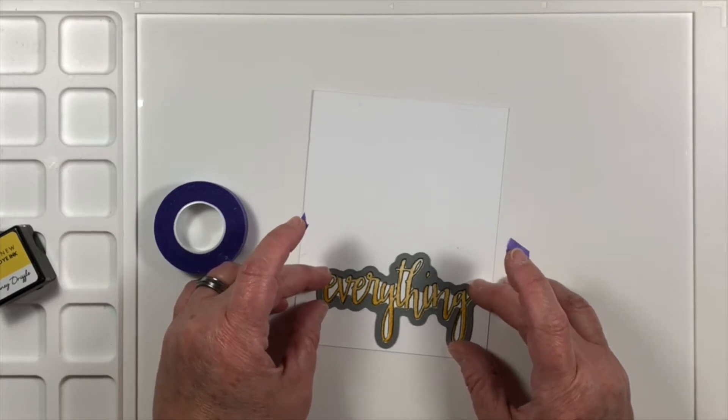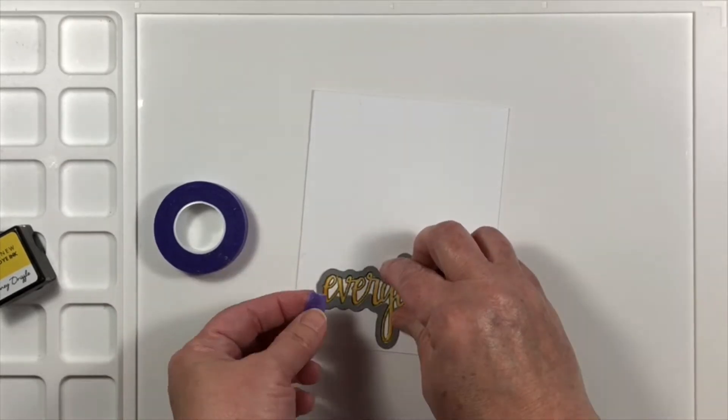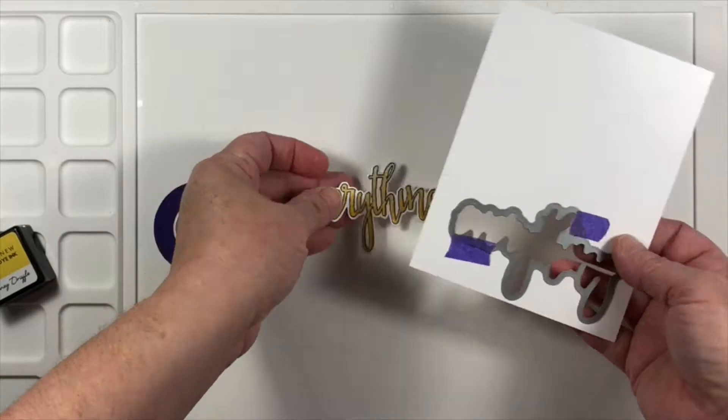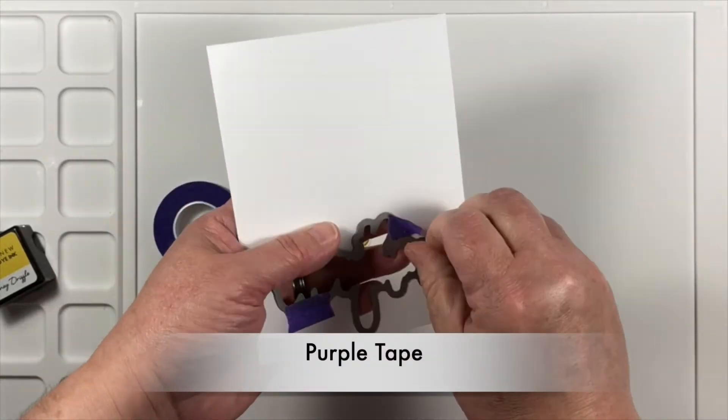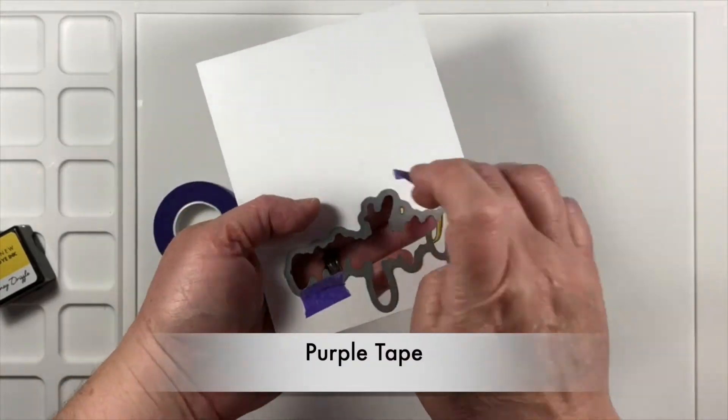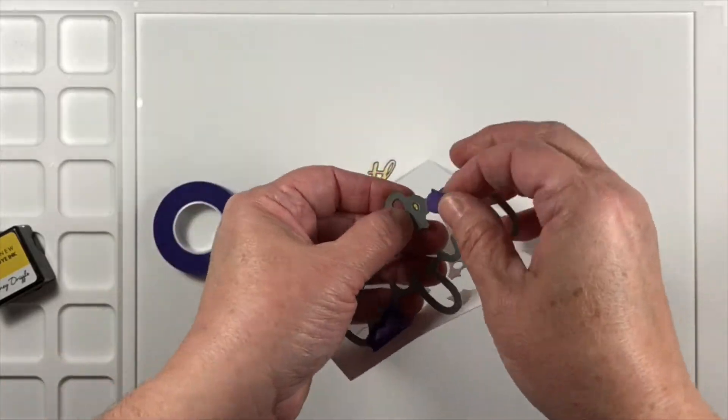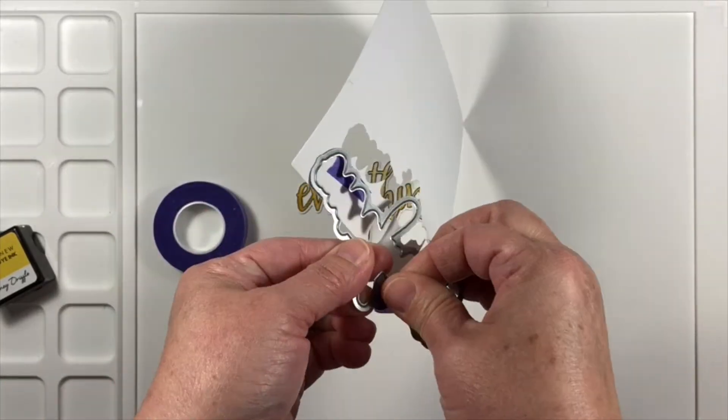I'm going to secure the die in place with some purple tape and when I'm removing it I don't want to lose that little dot of the i. So I've used a little bit of the purple tape to keep it in place.